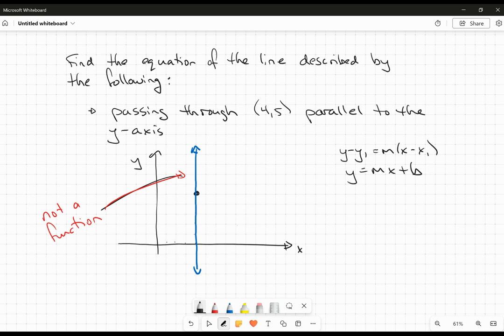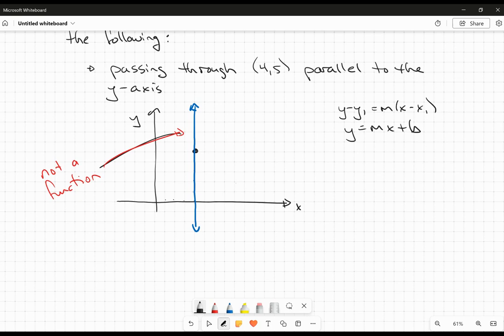If I was to identify this line, really the key aspect of it is that all of the x-coordinates, all the x-coordinates, all of them are 4. They're all exactly the same.